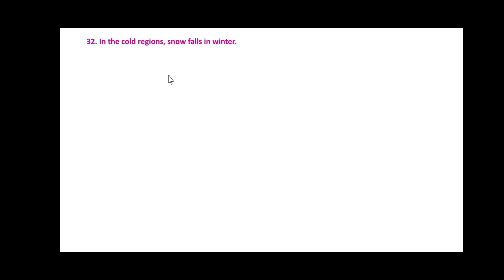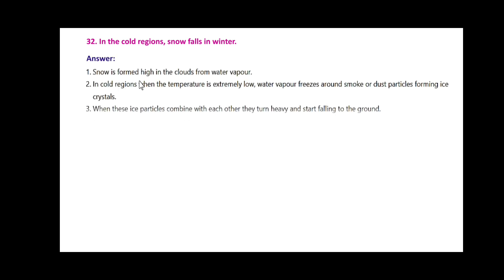In cold regions, snow falls in winter. Snow is formed high in the clouds from water vapor. In cold regions, when the temperature is extremely low, water vapor freezes around smoke or dust particles, forming ice crystals. When these ice particles combine with each other, they become heavy and start falling to the ground. This gives rise to snowfall in cold regions in winter.